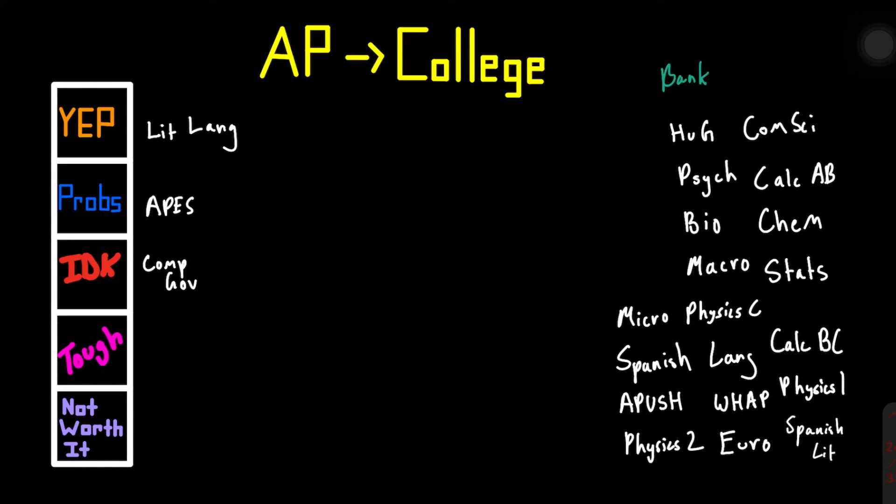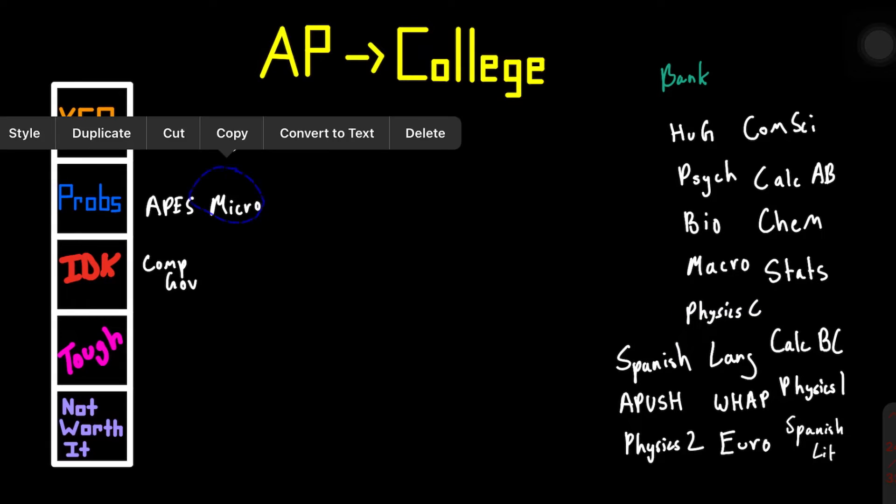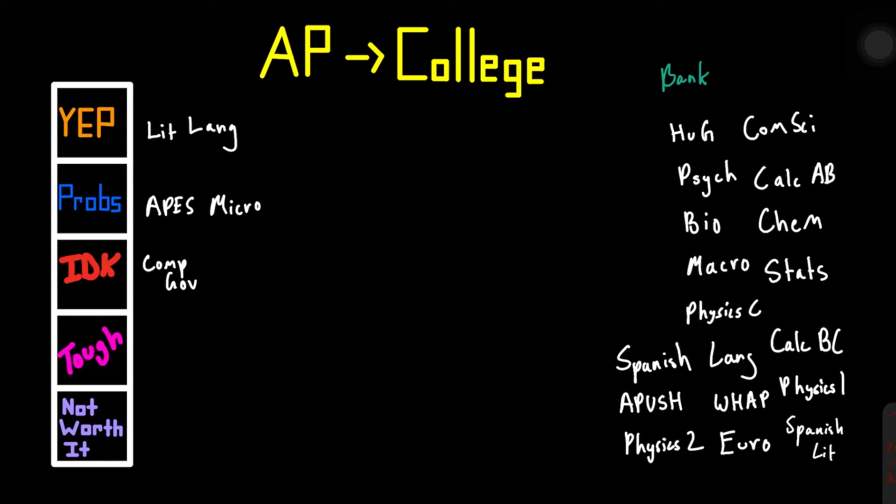Now we have micro. Micro is, I would say, especially as a business major, that it's a vital credit to have. And I didn't get it through AP credits. I got it over the summer through community college. But I'd say it's a probably. It's important to have. Micro is a pretty interesting class, too. I would take it.